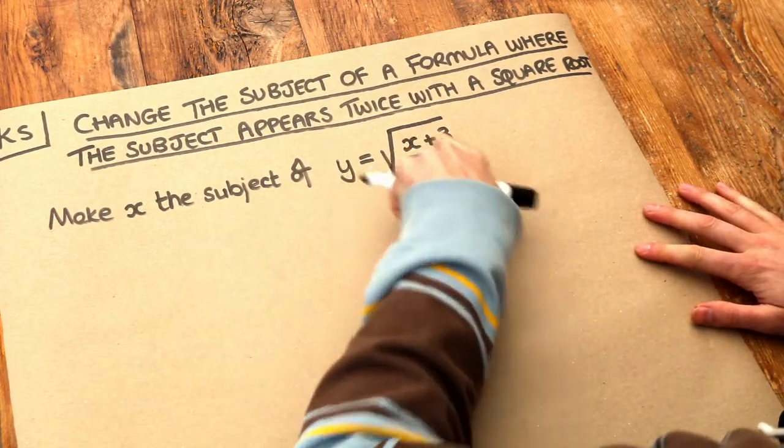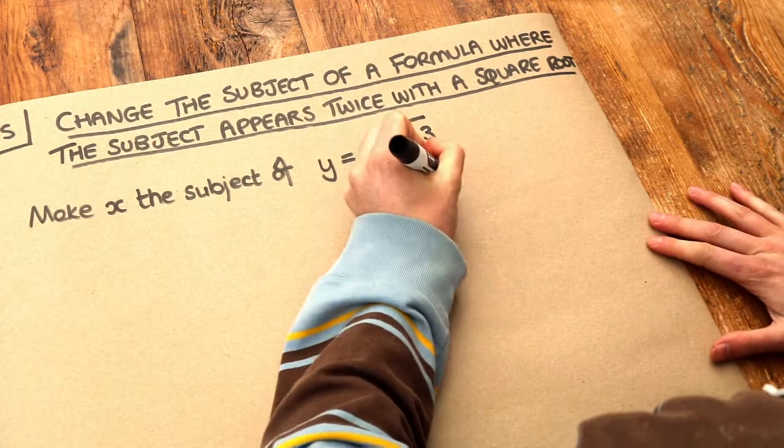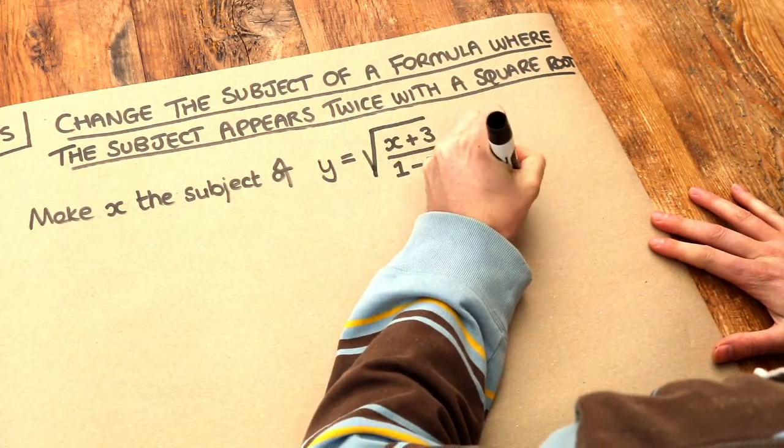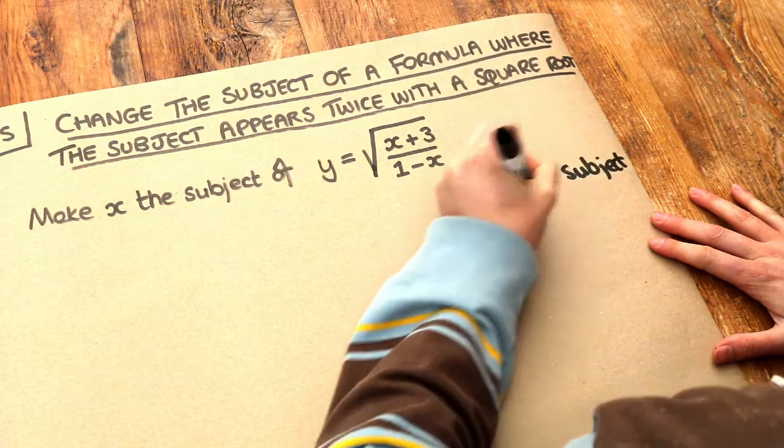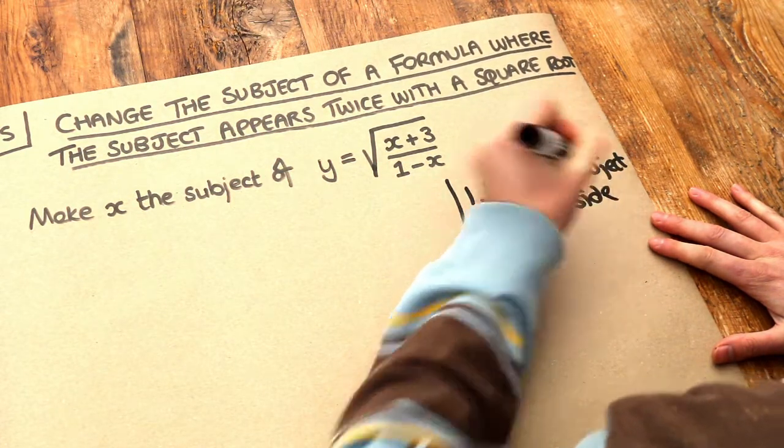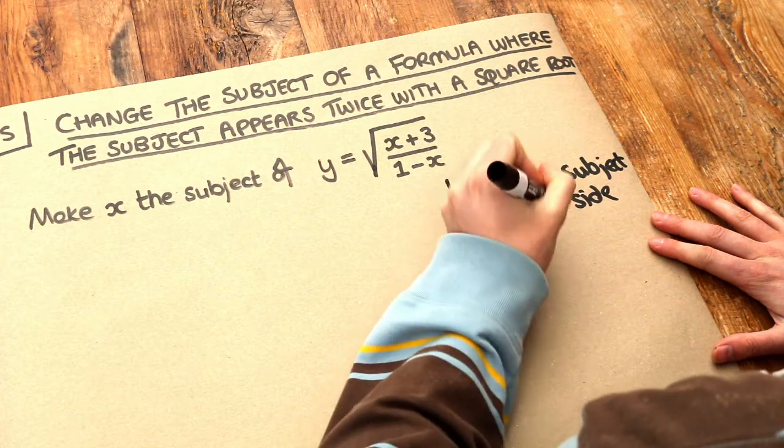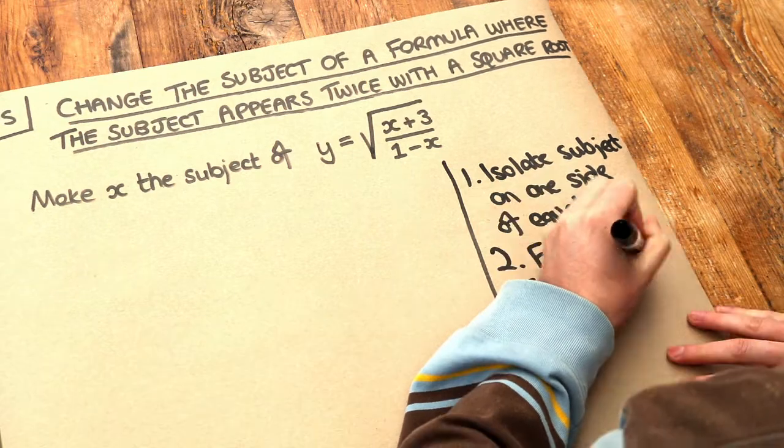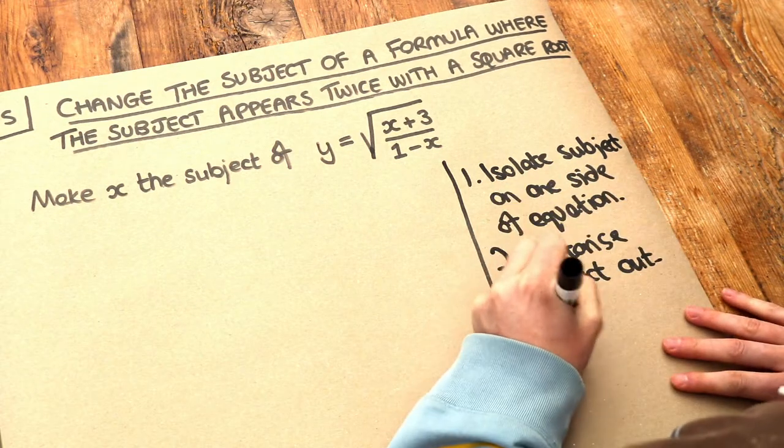Now do you remember when the subject appears multiple times in your equation, we had a very specific strategy. We first want to isolate the subject on one side of the equation, but without any fractions or brackets. We then factorise that subject out and then finally we divide appropriately.